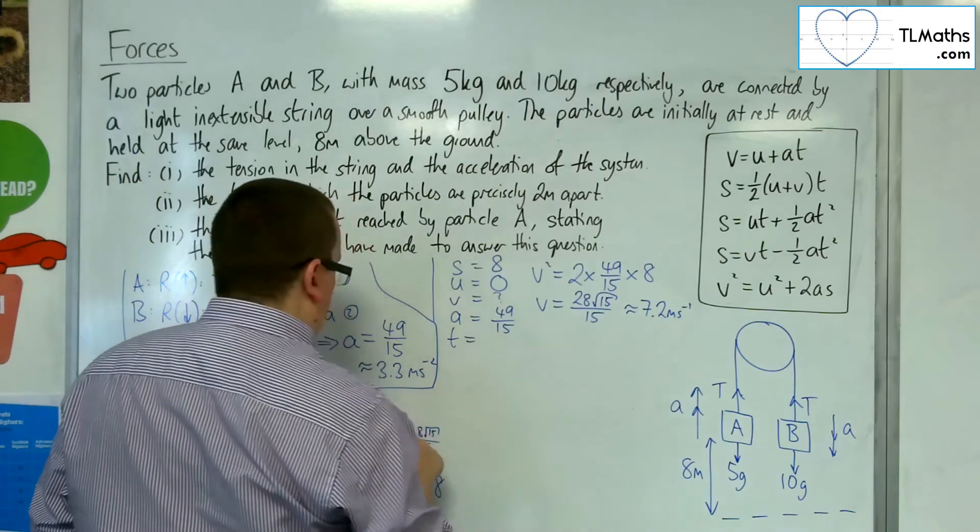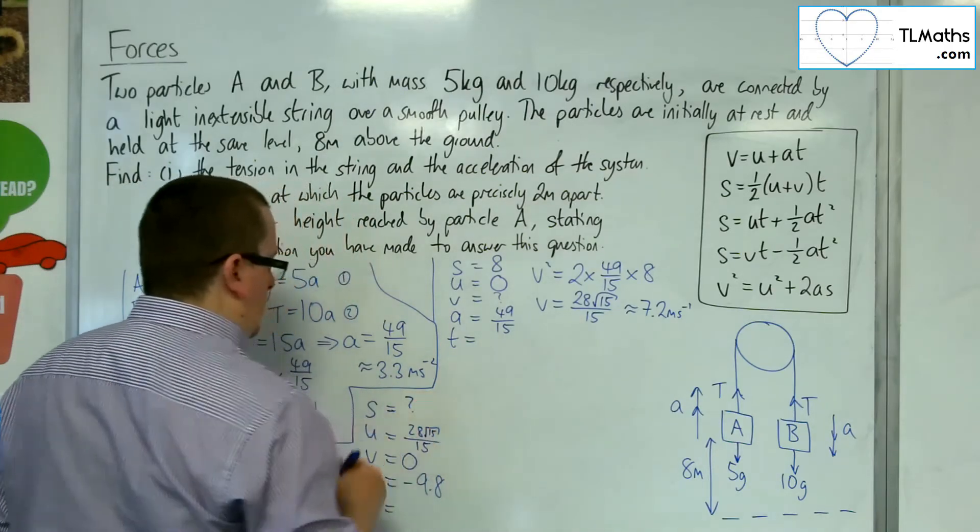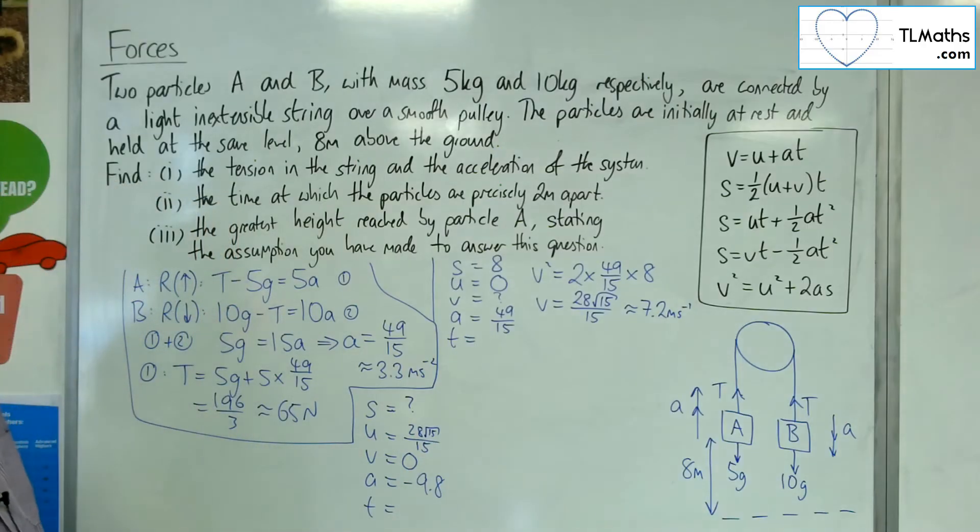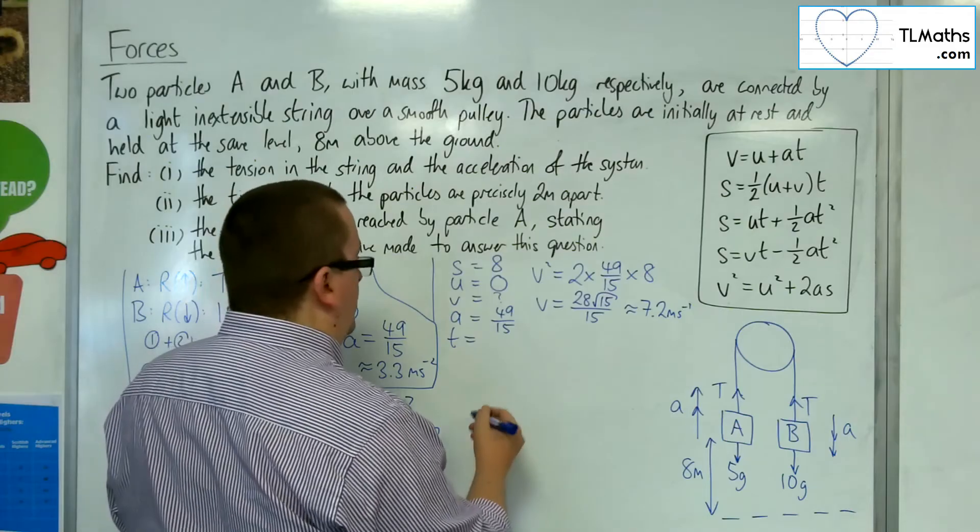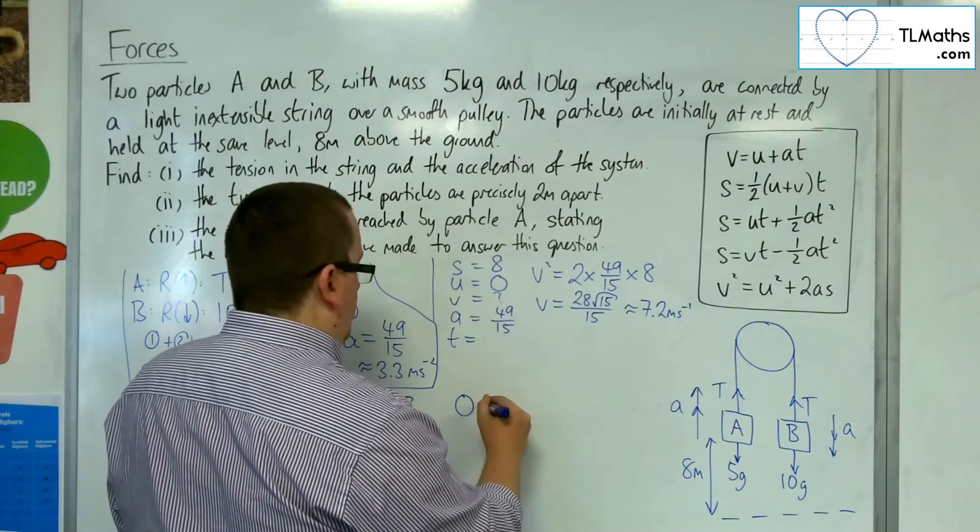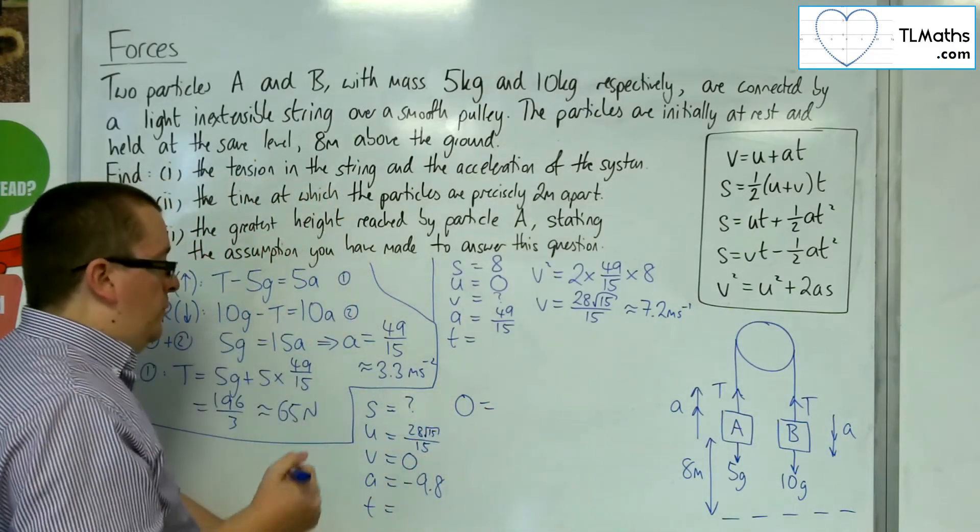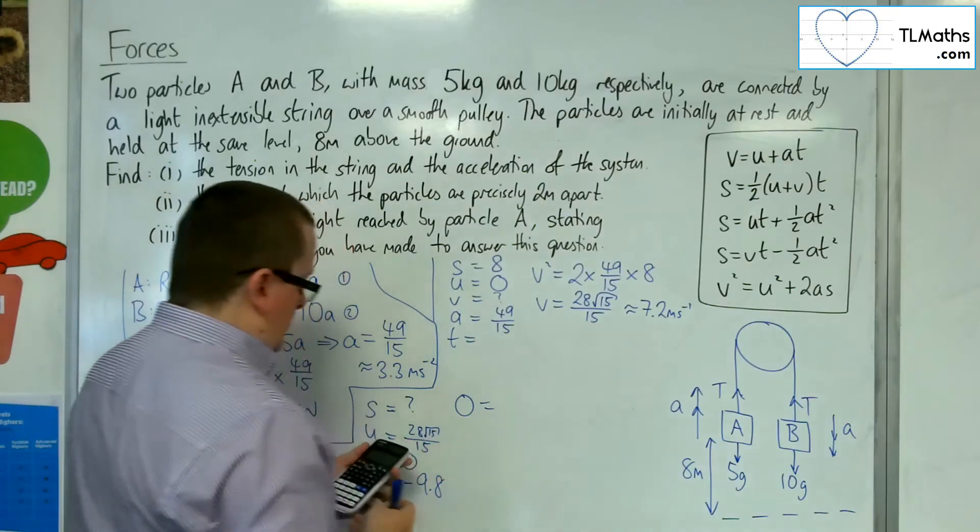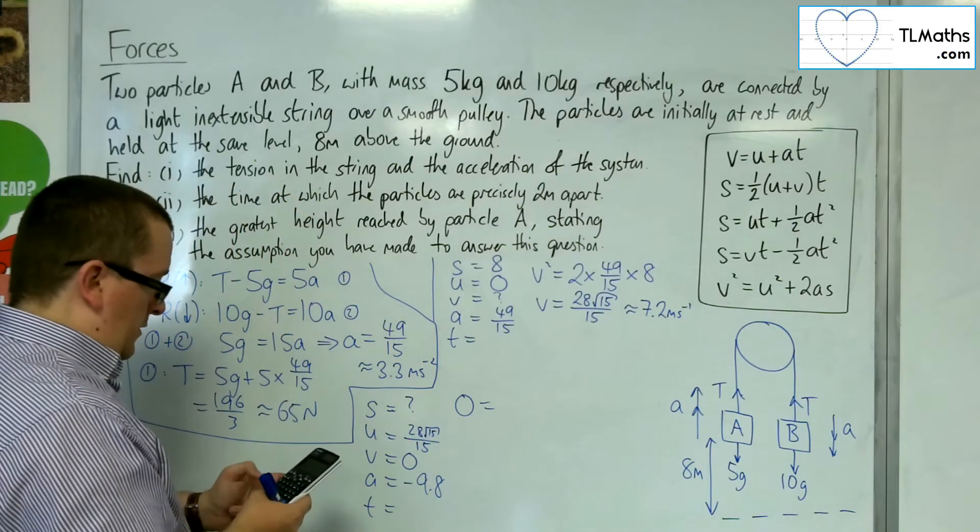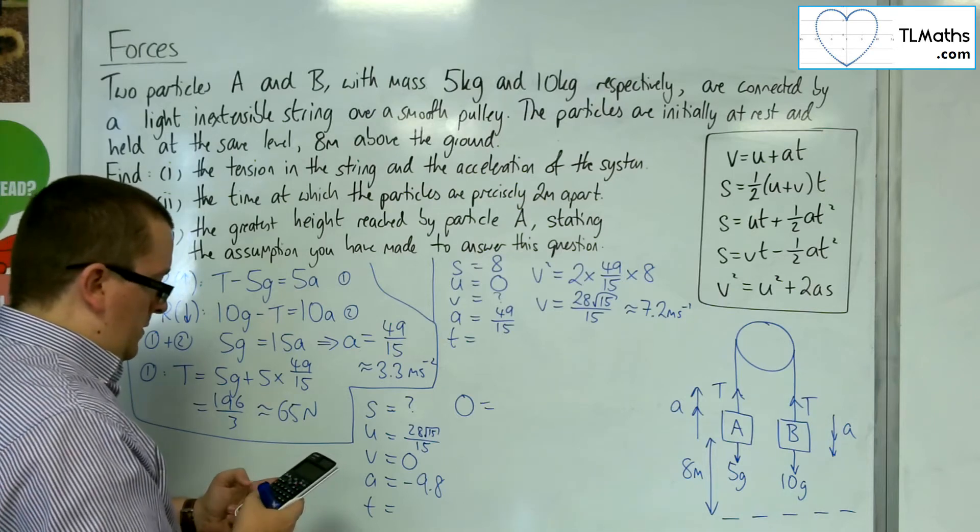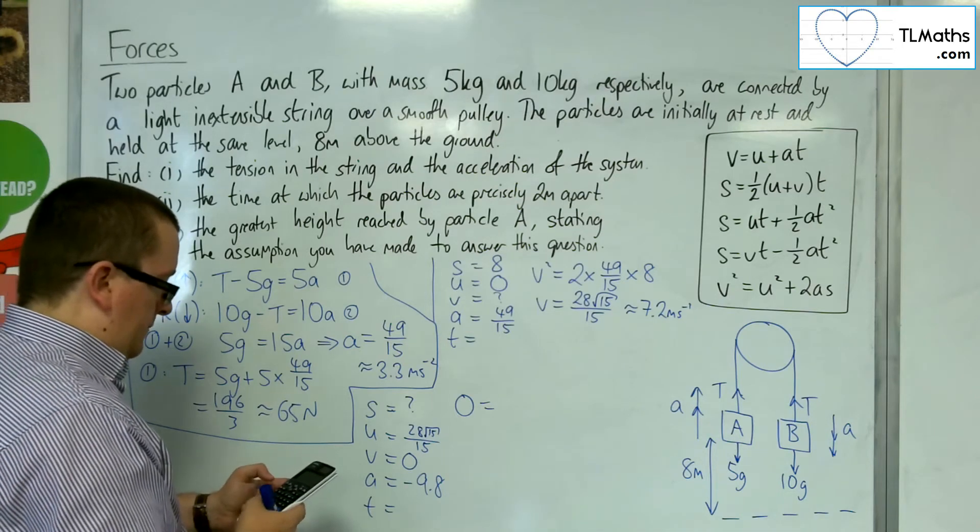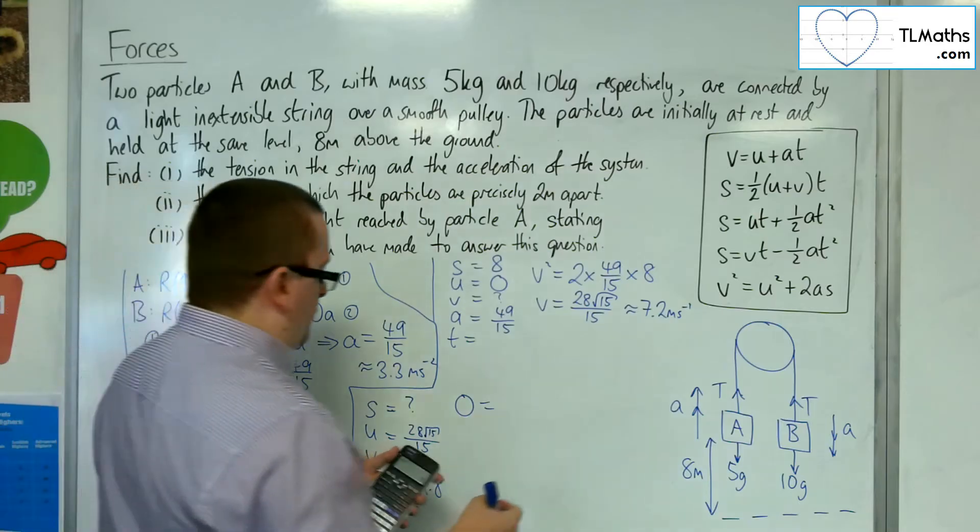Right. So, I want to find that value of S. So, I want the equation that doesn't have T, which is the fifth one again. So, V squared, which is zero squared, is equal to U squared, which is that squared. So, 28 lots of root 15 over 15, okay. Square that, and I get 784 over 15,